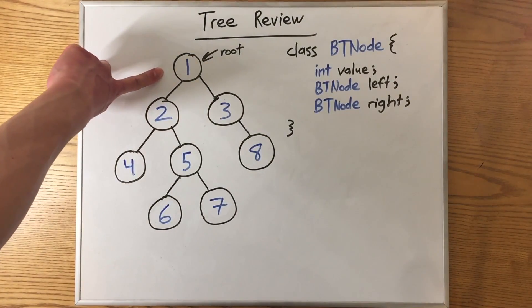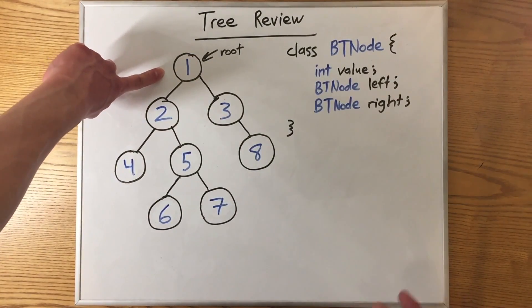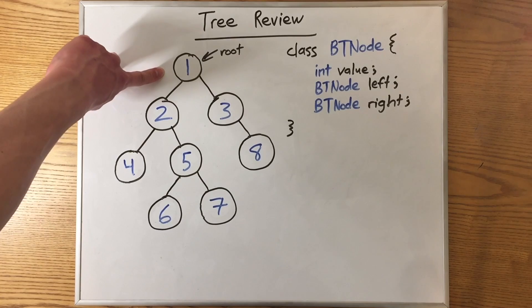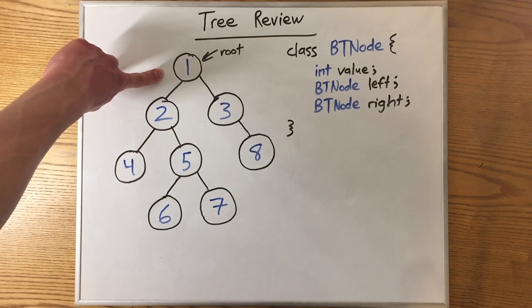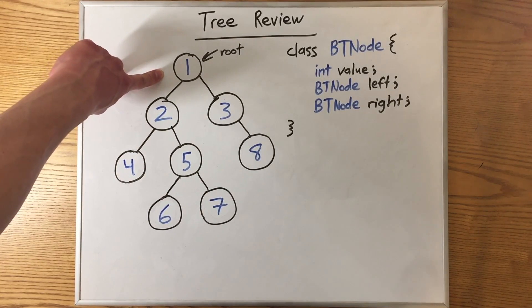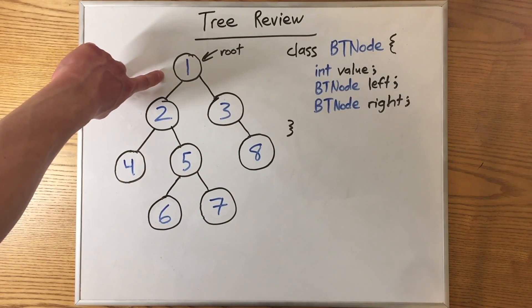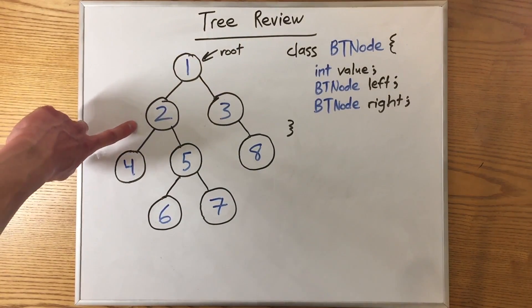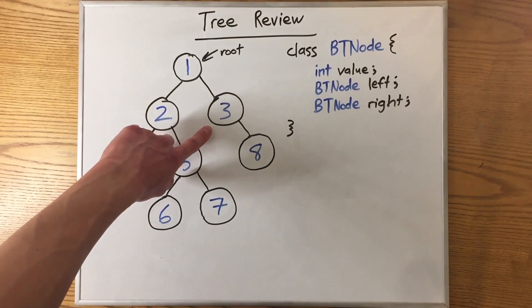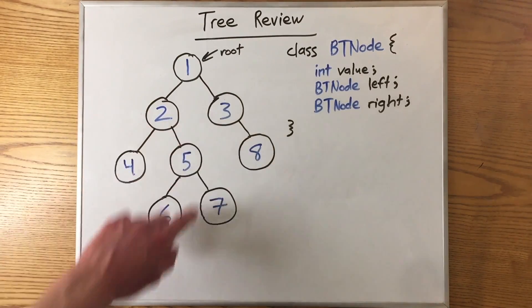Up here is the root of our binary tree, where the tree starts. In a binary tree, each node can have at most two children. In this case, the root has a left child, which is this node, and a right child, which is this node.